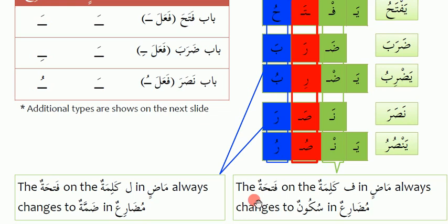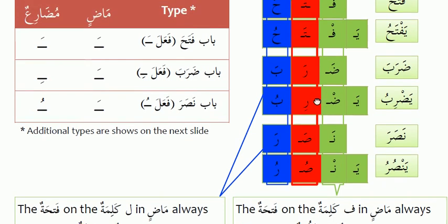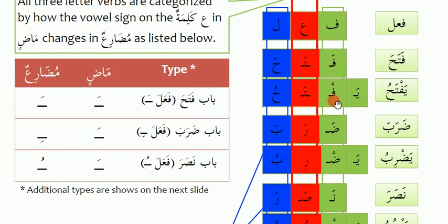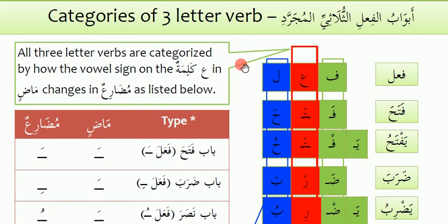Now, the Fath on the Fa Kalma in Madi always changes to Sukoon in Muzara. For example, in Yizrabu and Yansuru — the Fa Kalma becomes Sukoon. The structure is: Fa Kalma, Ain Kalma, Lam Kalma — and the Fa Kalma always takes Sukoon in Muzara. I added this slide so you can understand better.